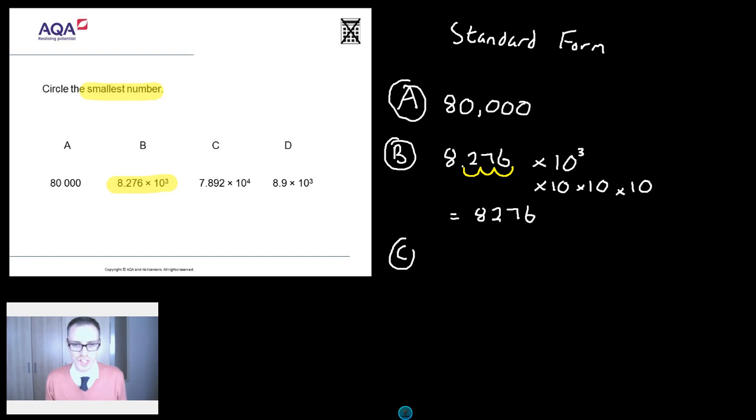What about C? C is a bit of 7.892 times 10 to the 4. So I'm going to make it 10 times bigger, then another 10, then another 10, then another 10. If you want to move your decimal points, go for it. So I'll start with 7. So it's going to be 78, 789, 7,892, and then another 10. So 78,920.